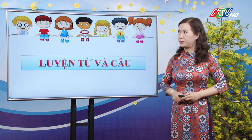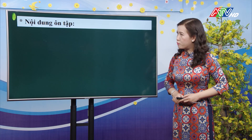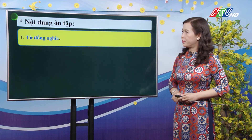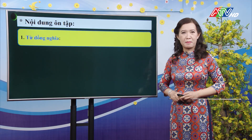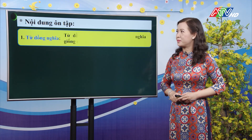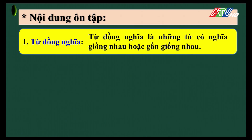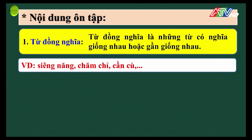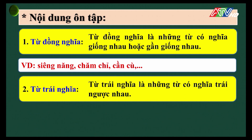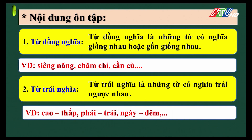Phân môn luyện từ và câu: cô và các con sẽ cùng ôn tập một số nội dung. Từ đồng nghĩa là những từ có nghĩa giống nhau hoặc gần giống nhau — ví dụ: siêng năng, chăm chỉ, cần cù. Từ trái nghĩa là những từ có nghĩa trái ngược nhau — ví dụ: cao-thấp, phải-trái, ngày-đêm.